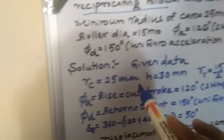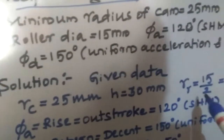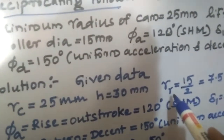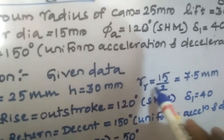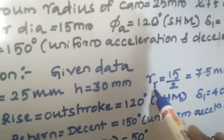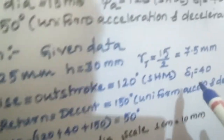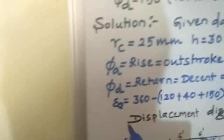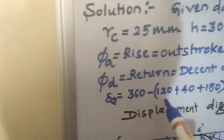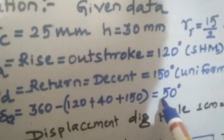The given data: radius of the cam RC is 25 mm, lift is 30 mm, radius of roller RR is 15 divided by 2, which comes to 7.5 — the diameter is given so you convert it to the radius of the roller. Rise or outstroke is 120 degrees with SHM, followed by dwell period of 40 degrees, then descending return is 150 degrees with uniform acceleration and deceleration. The remaining dwell period is 360 minus the sum of SHM, dwell, and return — you subtract to get the next dwell period.